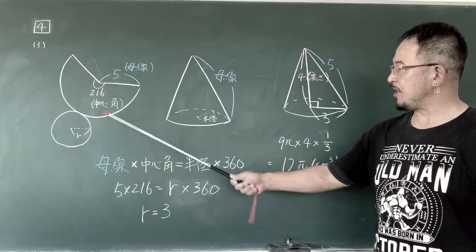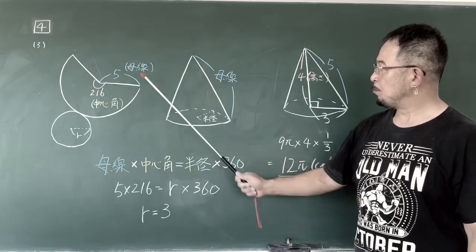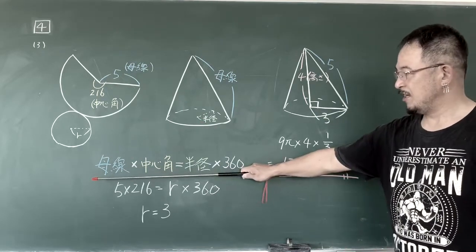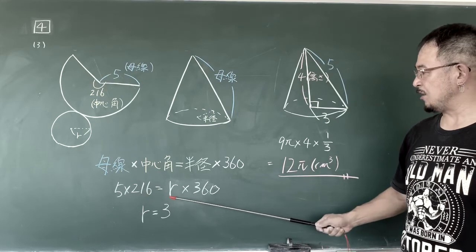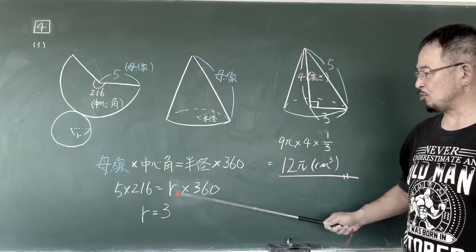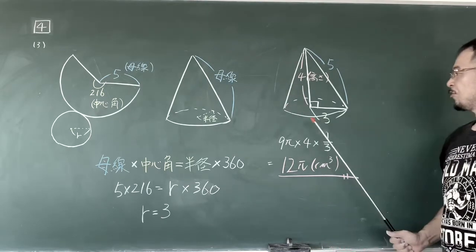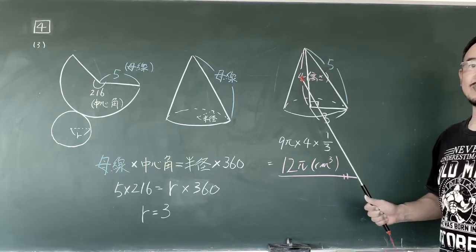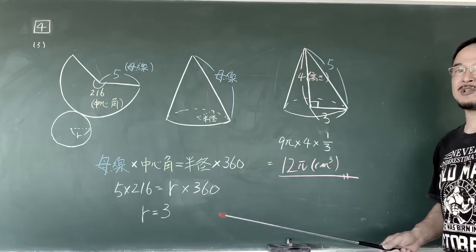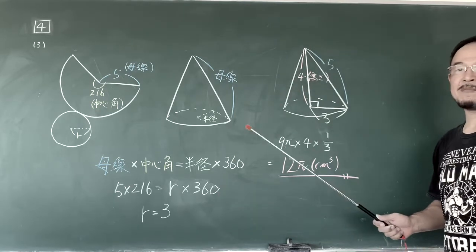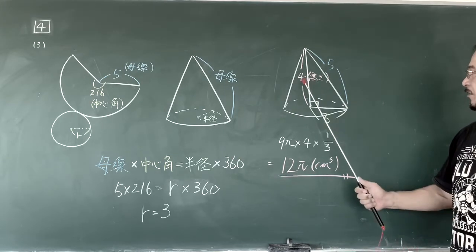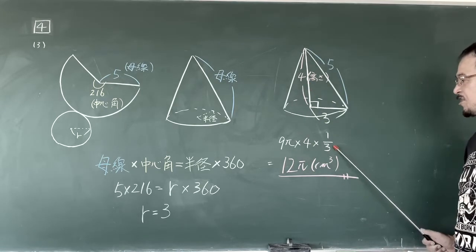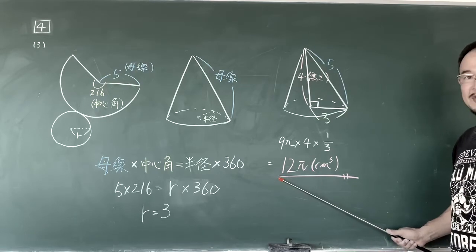4-3。円錐の体積を求めなさい。組み立てるとこんな感じ。弧の長さ×中心角は、半径×360。覚えてください。そうすると、5×216はR×360。これを解くとRは3と。ということは底面の半径が3です。で、母線は5です。三平方の定理で高さを出すのですが、高校入試で一番よく出る直角三角形の比は3対4対5です。したがって高さ4。底面積9π×高さ4×3分の1で、答えは12π立方センチということになります。